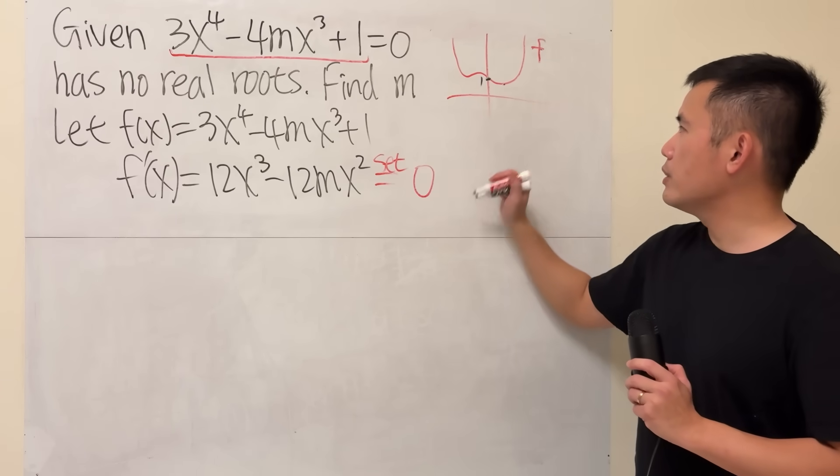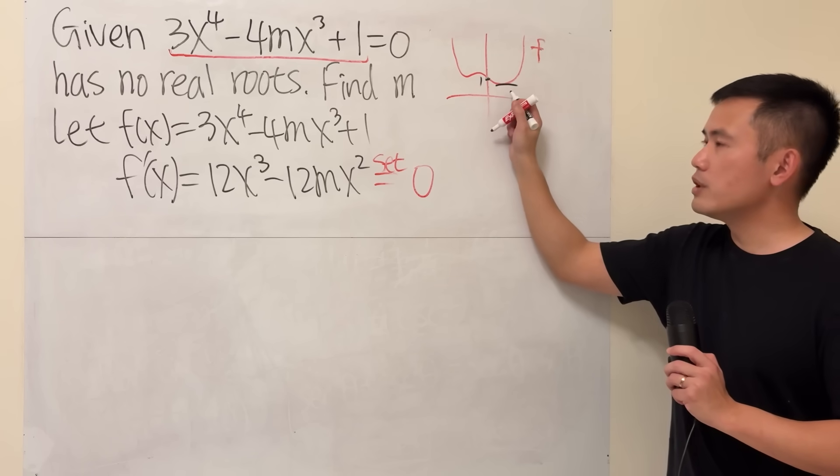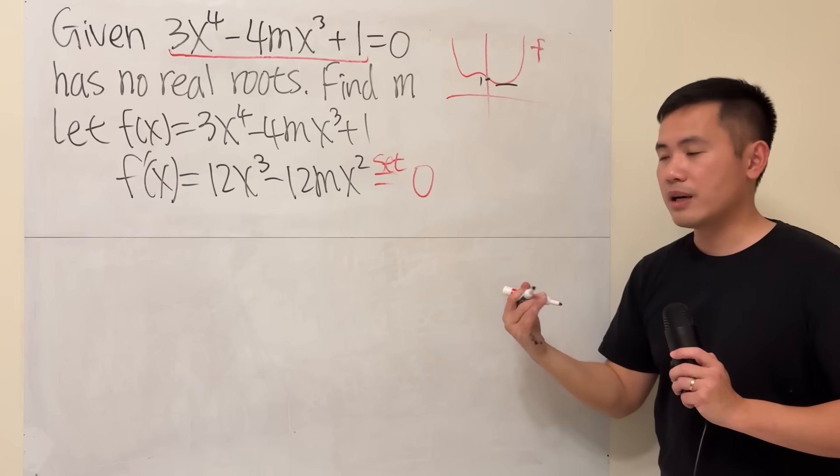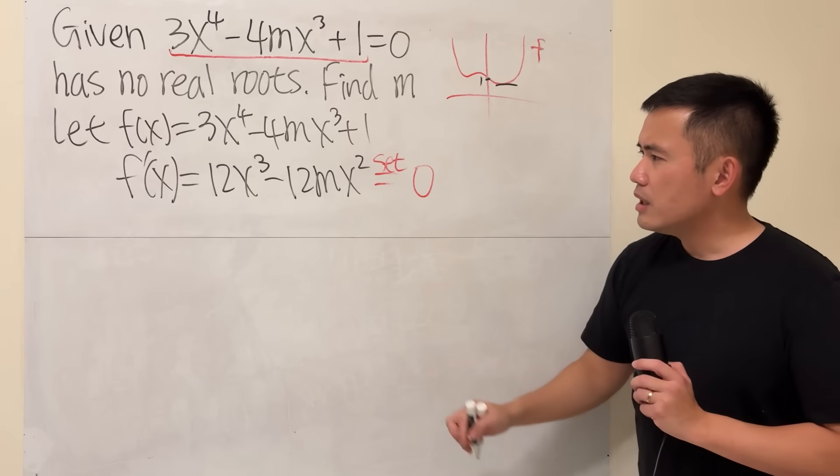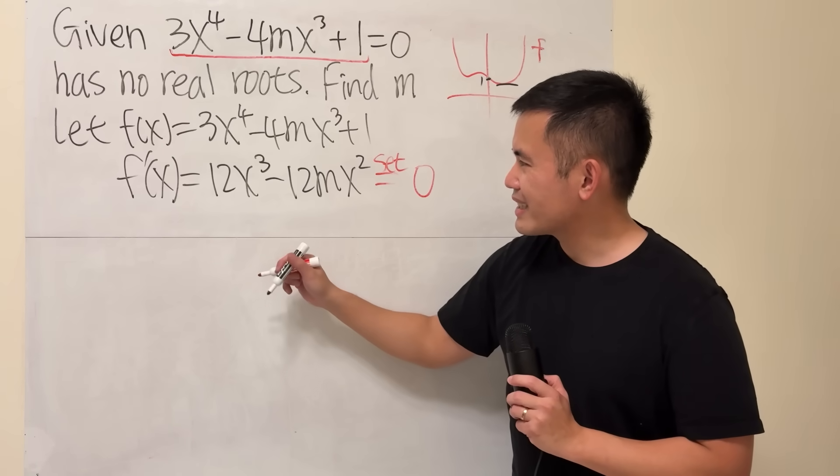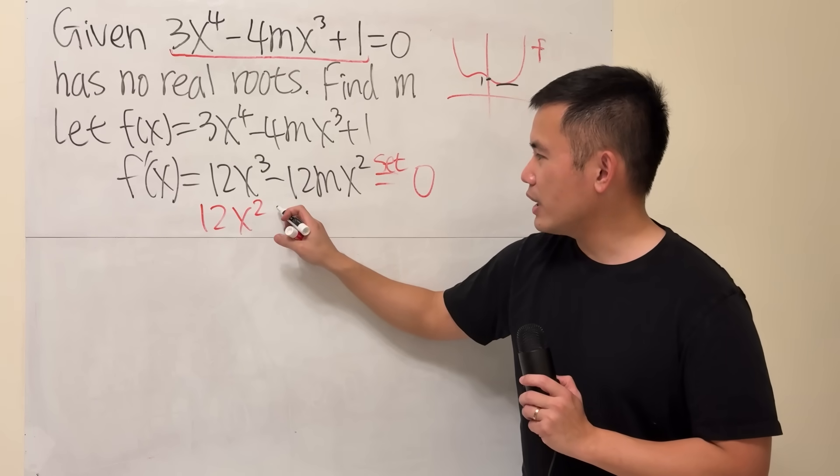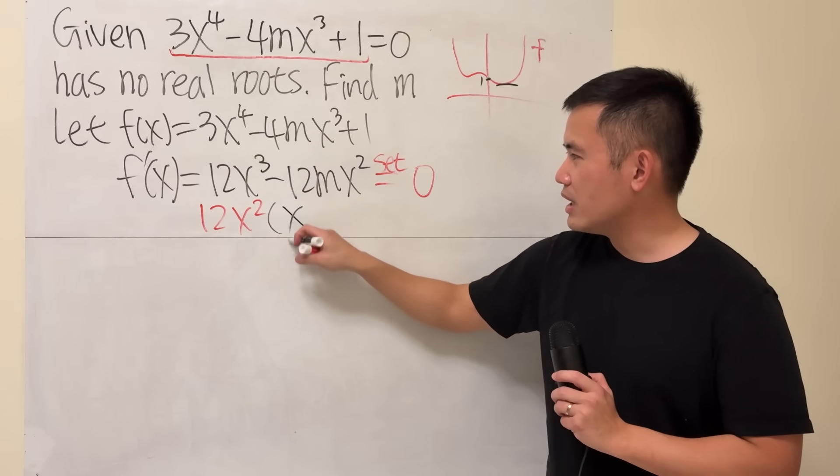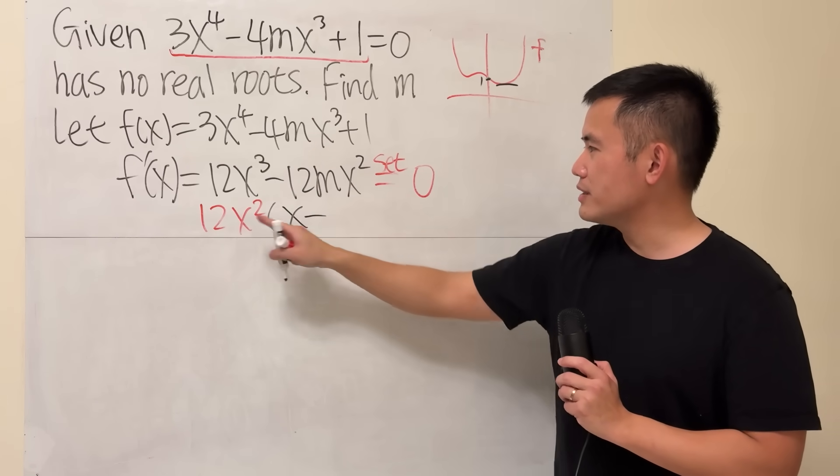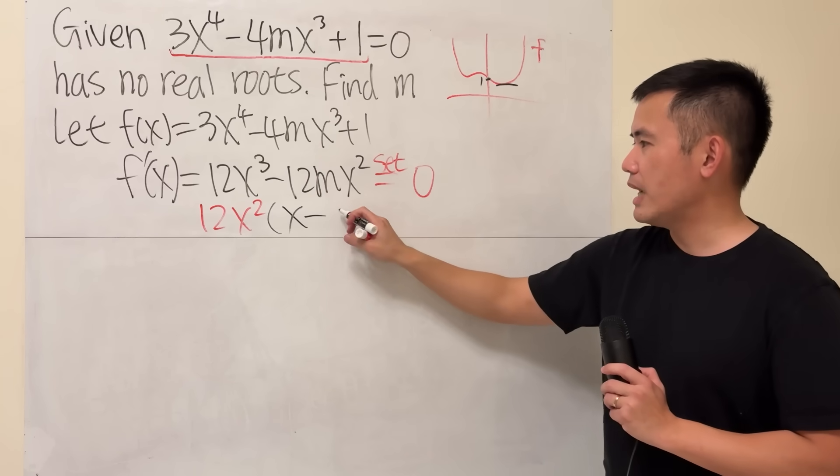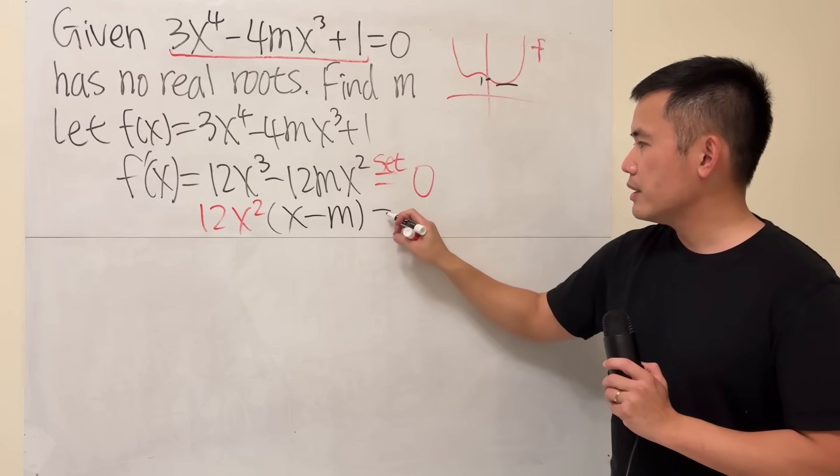That's our derivative. As usual we are going to set this equal to 0 because we want to find out where the tangent line is equal to 0 for some critical numbers. We can first factor out 12x squared, and then we get just x right here left. Minus 12 is out, x squared out, we have the m here equal to 0.